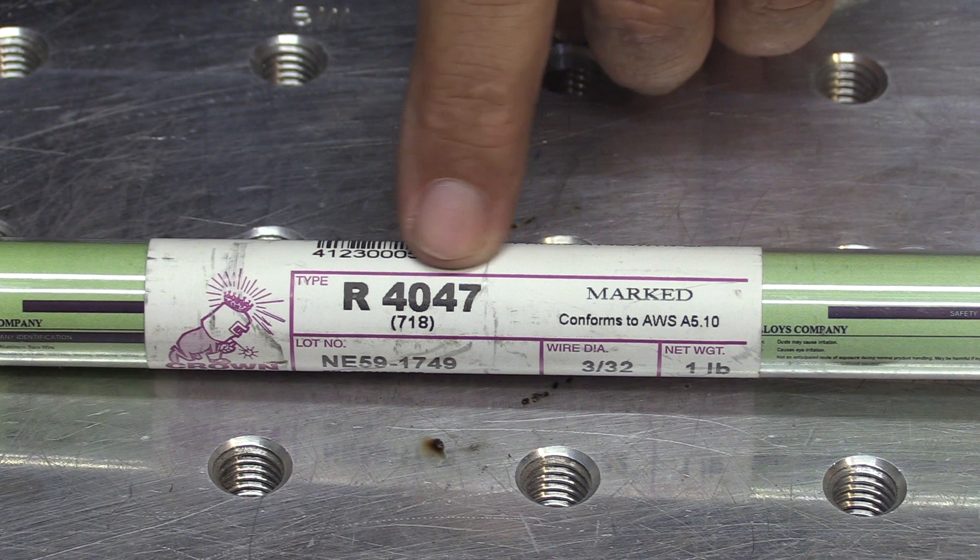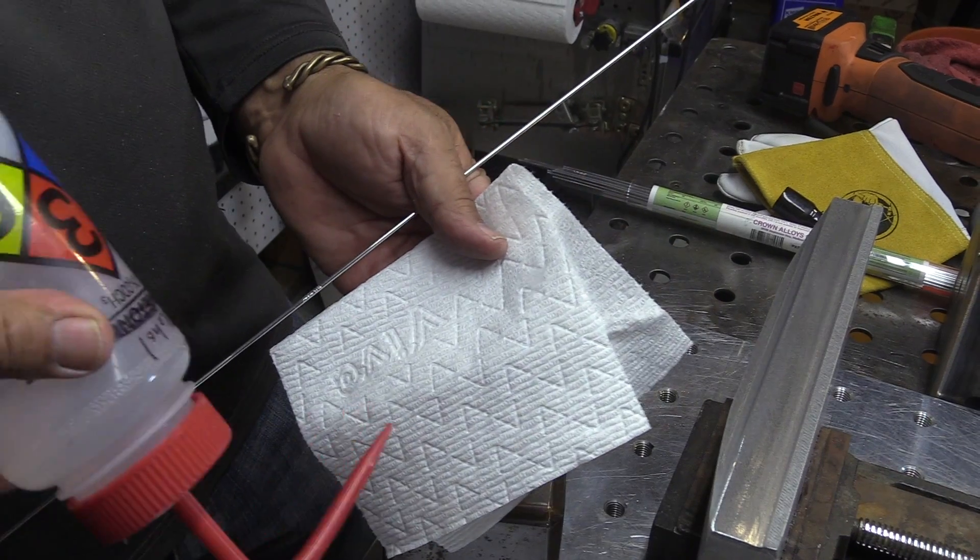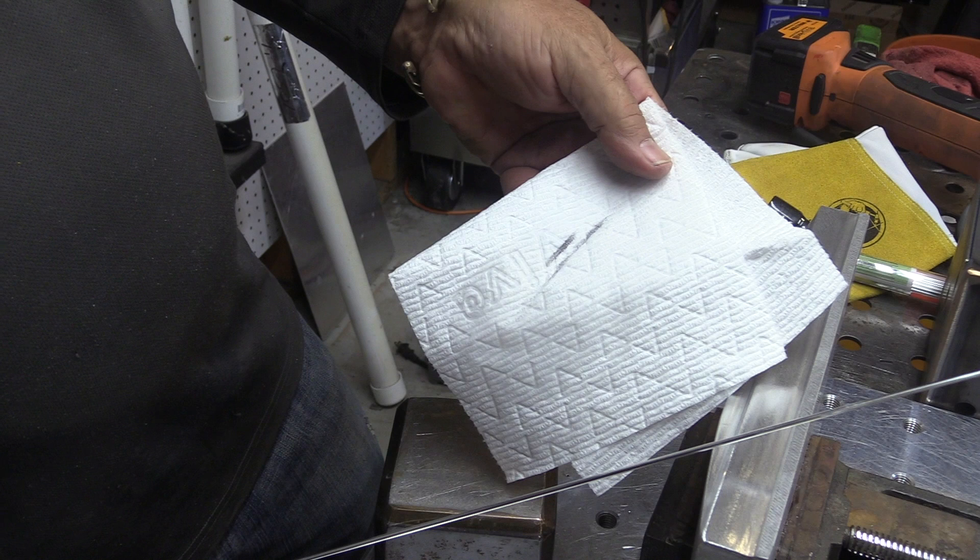4047 filler metal has got 12% silicon and it's got a lower melt point than 4043 and wets out better. I like to use it for castings, but also on a job like this where I'm striving to get a porosity-free weld after final machine. It's always good to do a wipe down of your rods too. They can look clean, but not really be very clean at all.